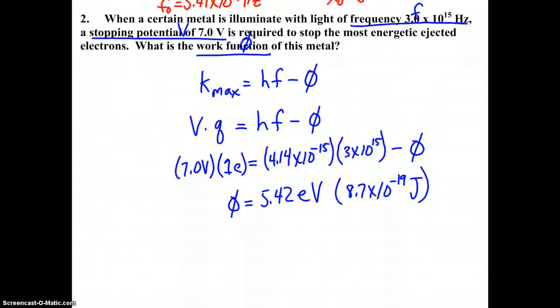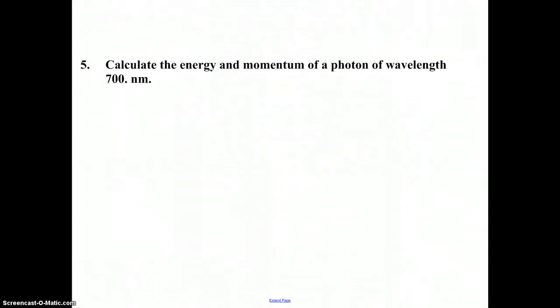Lastly, we have number 5, which asks us to calculate the energy E and the momentum P of a photon of wavelength 700 nanometers, that's lambda.